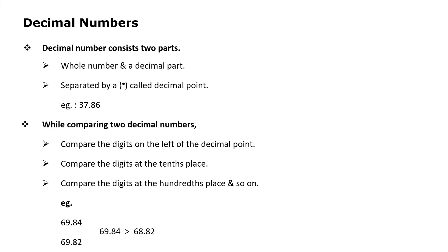The next topic is decimal numbers. A decimal number consists of two parts — a whole number part and a decimal part — separated by a dot called the decimal point. For example, 37.86. While comparing two decimal numbers, first compare the digits on the left of the decimal point starting from the leftmost digit. If they are the same, compare the digits on the right starting from the tenths place.